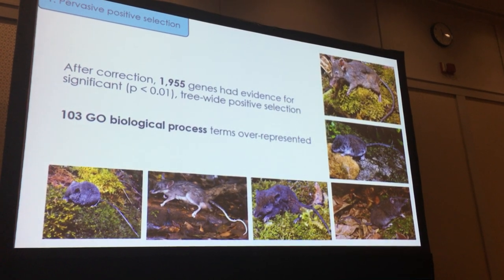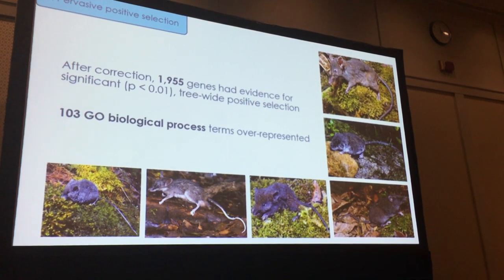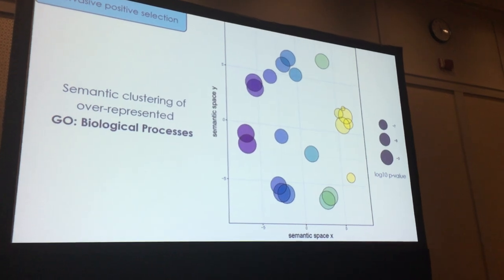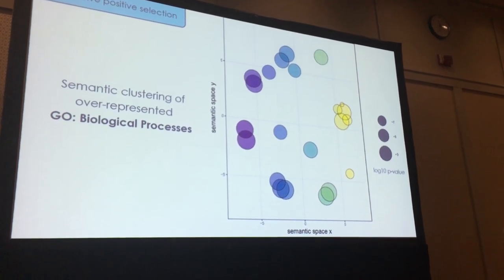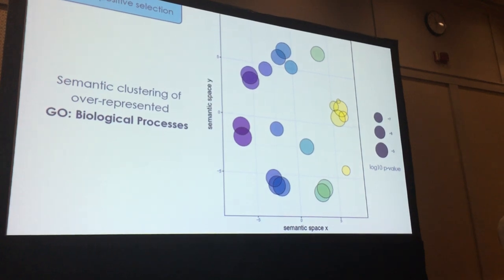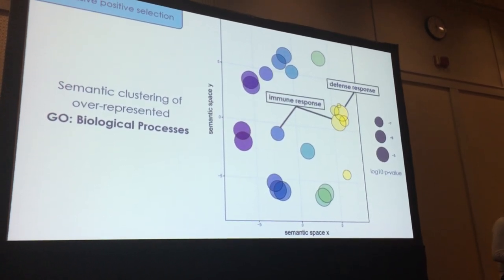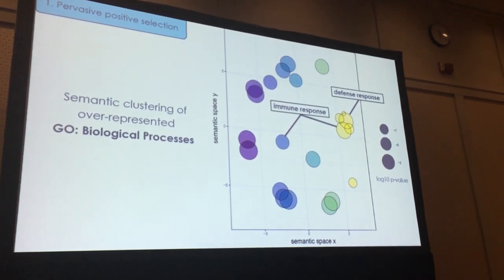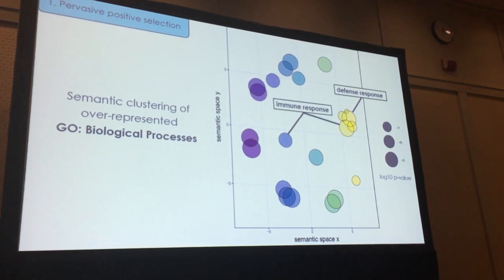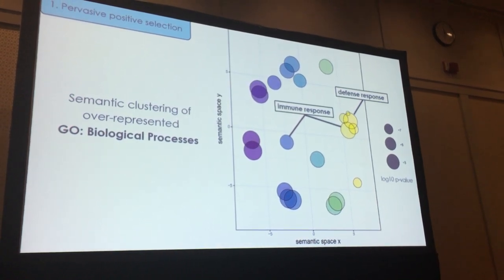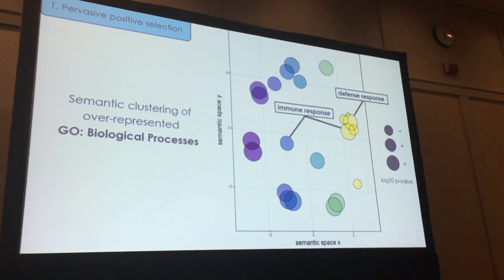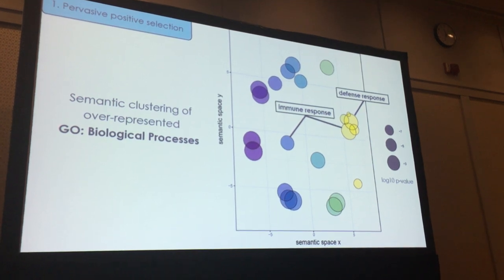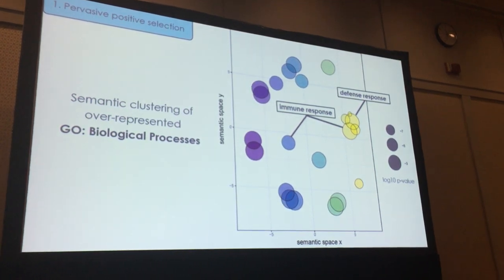Among those genes, there were 103 gene ontology biological process terms that were statistically over-represented. A semantic clustering plot reduces redundancy across those 100+ terms. The first category to highlight is that quite a number of immune-related processes were over-represented — which is an a priori expectation, because we know most species are in an evolutionary arms race with pathogens in their environment, so it makes sense that genes related to immune system processes are going to be under diversifying selection throughout the radiation.